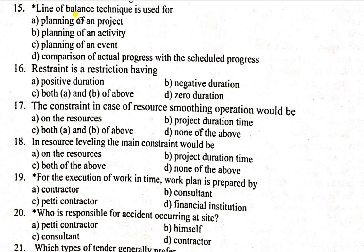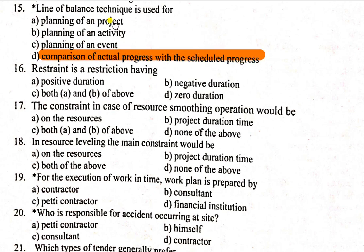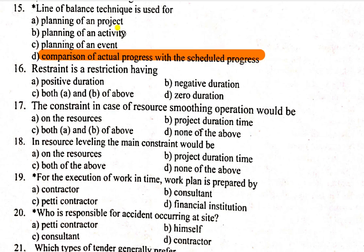The options are: Planning of a project, Planning of an activity, Planning of an event, and Comparison of actual progressive work with the scheduled progressive work. The Line of Balance Technique means the comparison of actual progressive work with the scheduled progress.